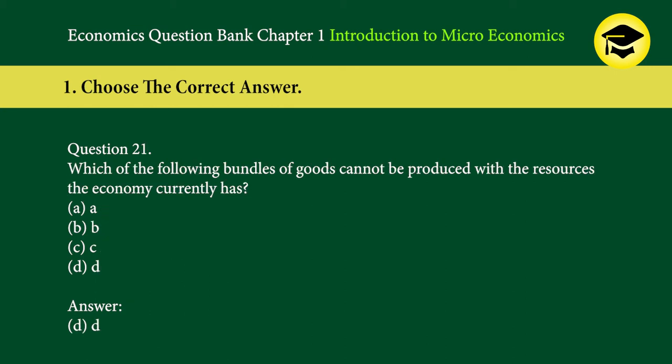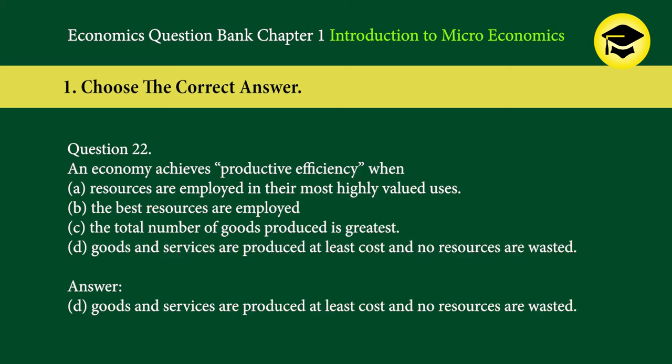Question 21: Which of the following bundles of goods cannot be produced with the resources the economy currently has? A. A, B. B, C. C, D. D. Answer: D.